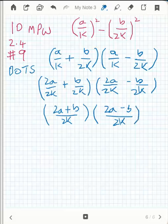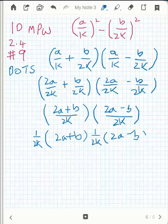I can take that 2k as a factor out of that first bracket and have 1 over 2k times 2a plus b. And there's also a 2k in this one. So 1 over 2k times 2a minus b. Let's clean that up and make sure it looks like it's a minus.